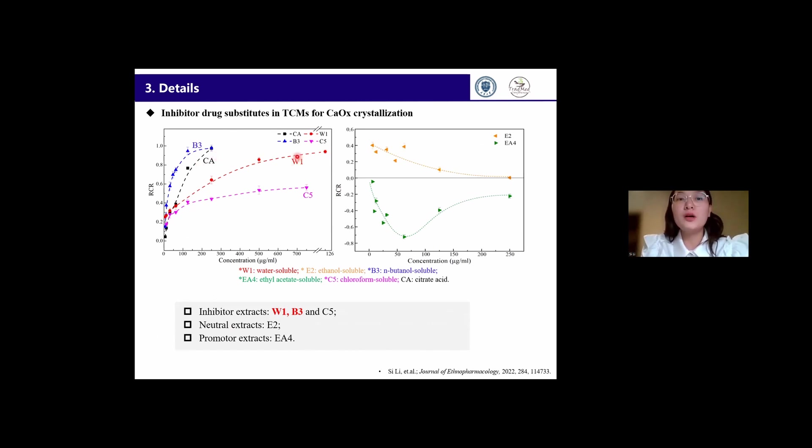Further, we also find water and chloroform soluble extracts display inhibitory effects too, but less effective than butanol-soluble extracts and citrate. In contrast, the ethyl acetate and petroleum ether soluble extracts show little inhibition or promotion on the calcium oxalate crystallization.